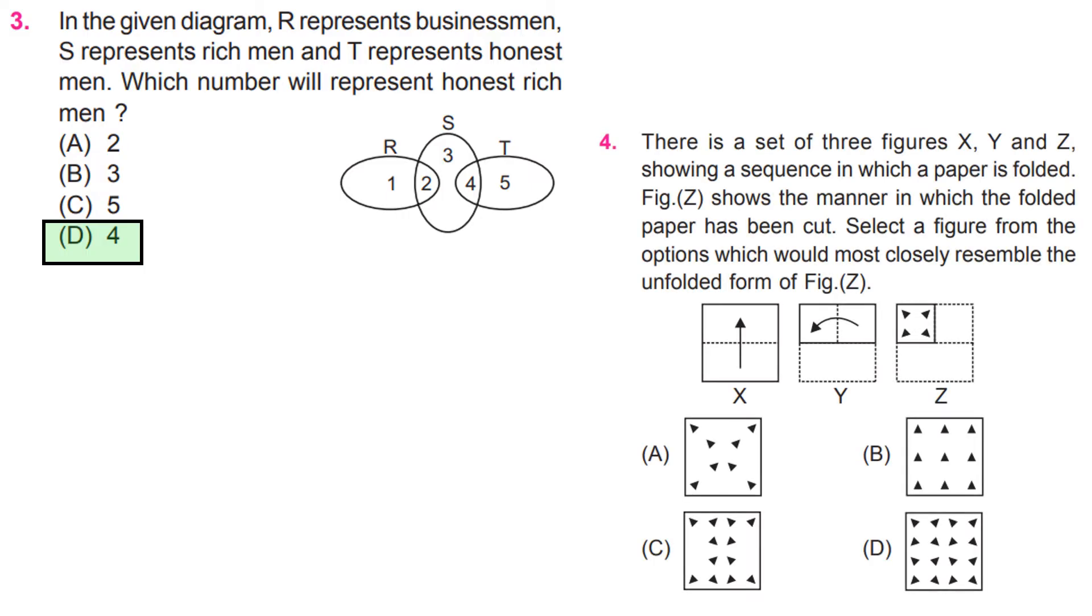There is a set of three figures X, Y, and Z showing a sequence in which a paper is folded. Figure Z shows the manner in which the folded paper has been cut. Which figure from the options would most closely resemble the unfolded form of figure Z? D.